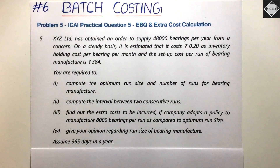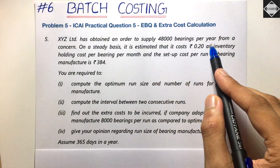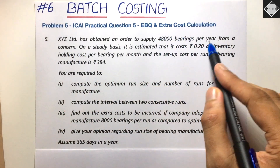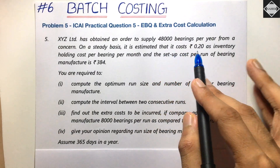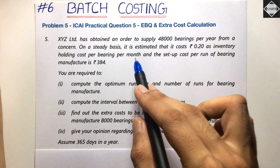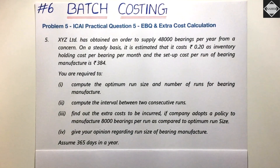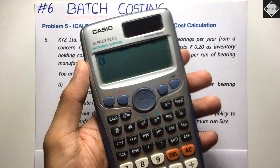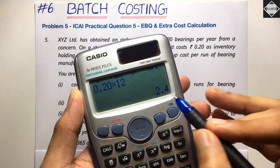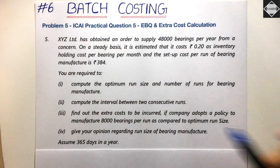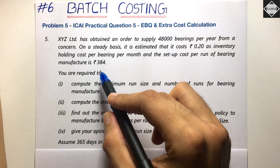XYZ Limited has obtained an order to supply 48,000 bearings per year — that is our annual demand. The inventory holding cost is ₹0.20 per bearing per month. Since we need the per-annum figure, we multiply by 12: 0.20 × 12 = ₹2.4 per unit per year. The setup cost per run is ₹384, which we can use directly in the formula.